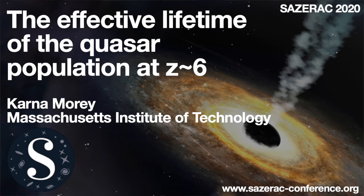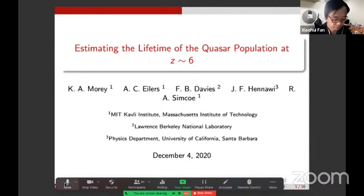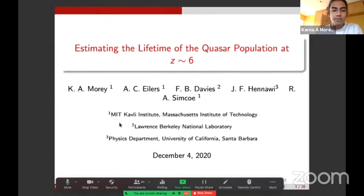Our first talk is from Karna Mori, Effective Lifetime of the Quasar Population at Redshift 6. Please go ahead. Can you all see this? Yes. Hi, thank you. My name is Karna Mori, and I'm a third-year undergrad at MIT. Today I'll be talking about estimating the lifetime of the quasar population at Redshift 6 via their stacked proximity zone. This work was done in collaboration with Christina Eilers, Fred Davies, Joe Hanawi, and Rob Simcoe.